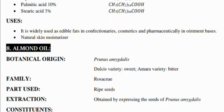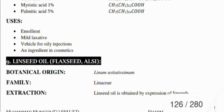Another oil is almond oil, known as Prunus amygdalus, with the Rosaceae family, with ripe seeds as the part used. It is used as an emollient, mild laxative, vehicle for oily injections, and as an ingredient in cosmetics.